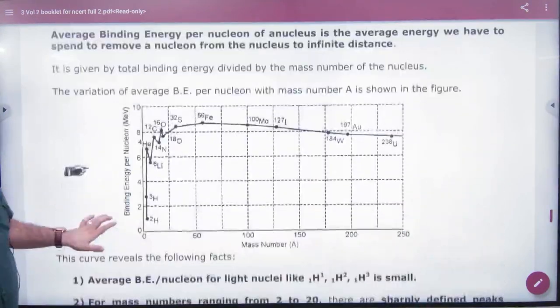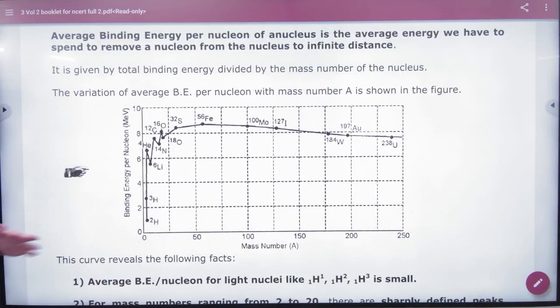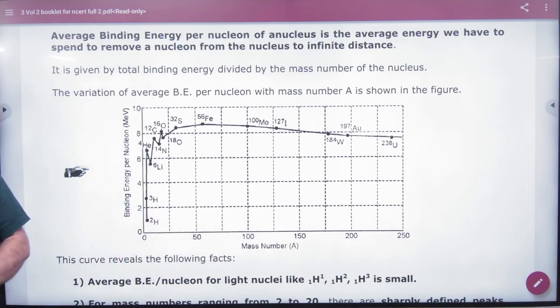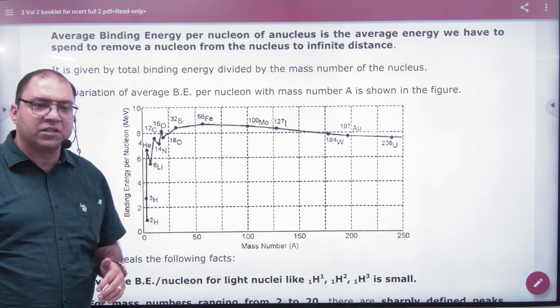So, in the binding energy curve, I learned that the graph of binding energy per nucleon versus mass number shows that hydrogen and uranium are low.